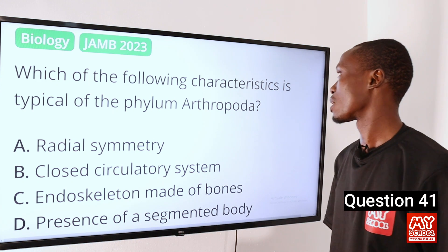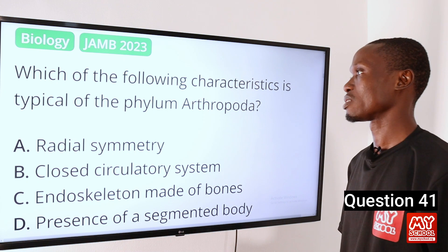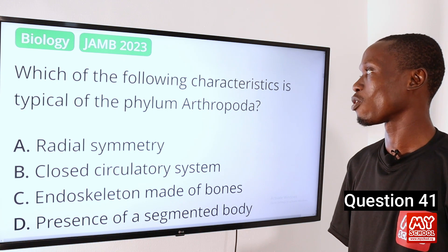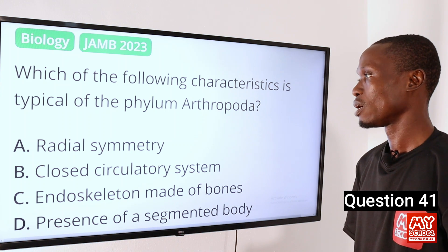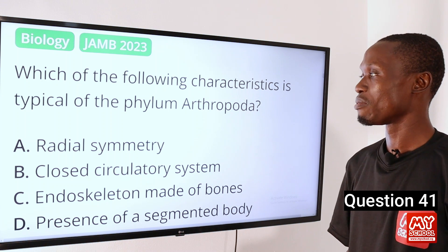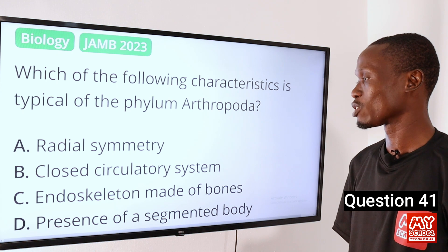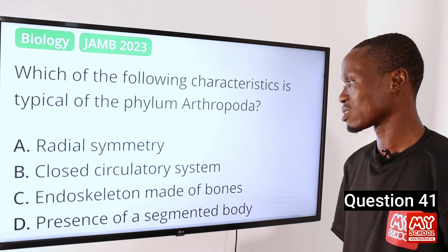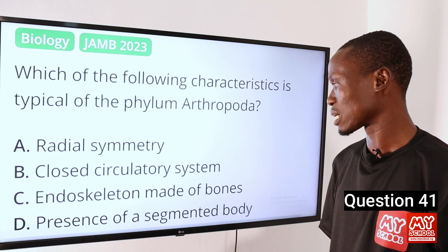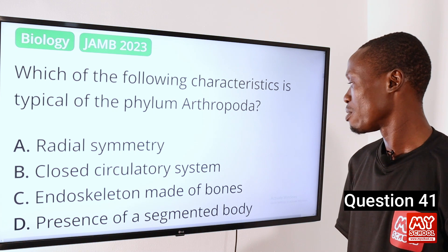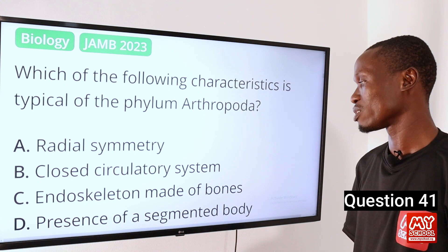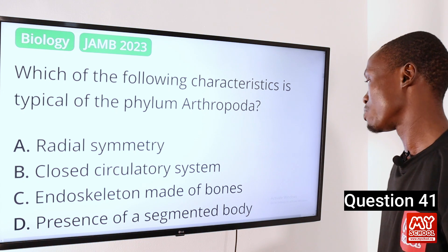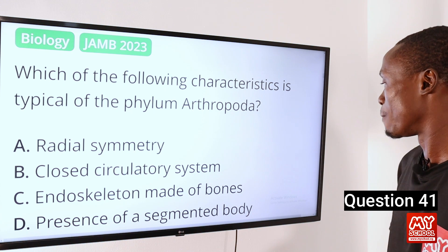Which of the following characteristics is typical of the phylum Arthropoda? A. Radial symmetry. B. Closed circulatory system. C. Endoskeleton made of bones. D. Presence of a segmented body.